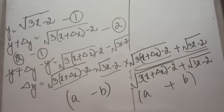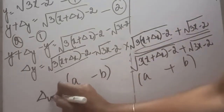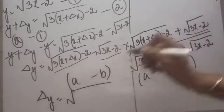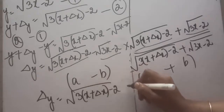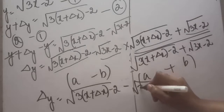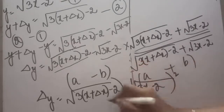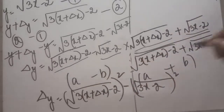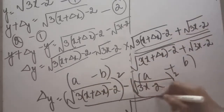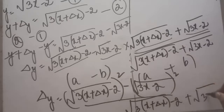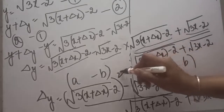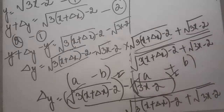On the left hand side we have delta y, and after applying this formula the numerator becomes root(3x + delta x - 2) squared minus root(3x - 2) squared. In the denominator the same expression is left: root(3x + delta x - 2) plus root(3x - 2). The square cancels the under root, so we are left with the simplified form.